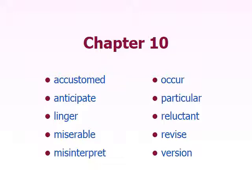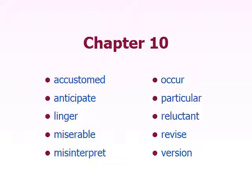Let me read through these words and we'll take some guesses at the parts of speech. We have accustomed, anticipate — that's the '-ate' sound again at the end — linger, miserable — we talked briefly about the '-able' suffix — misinterpret, so we had interpret before and now we have 'mis-' in front. Then occur, particular, reluctant, revise, and version, which ends in S-I-O-N, which should give you some clue.